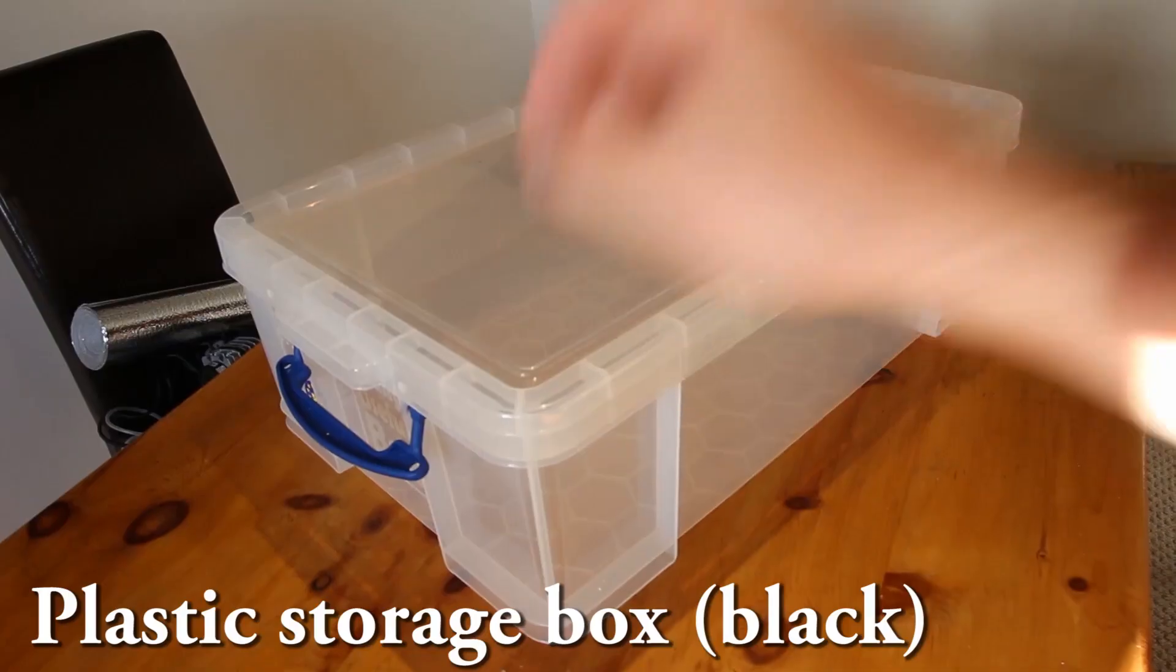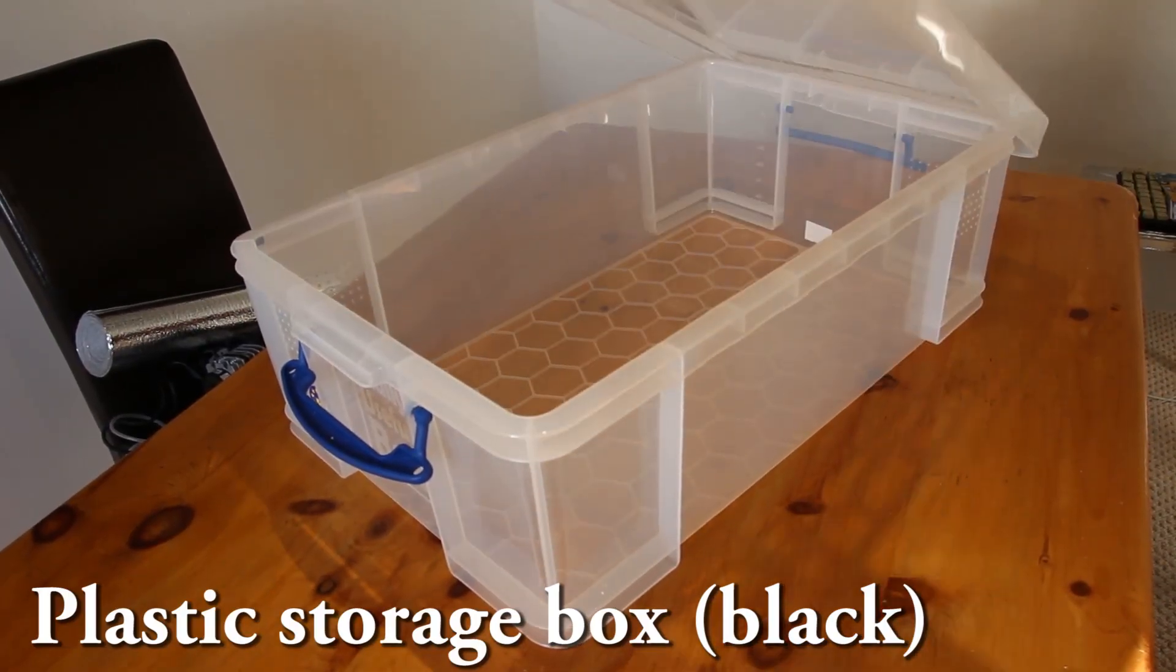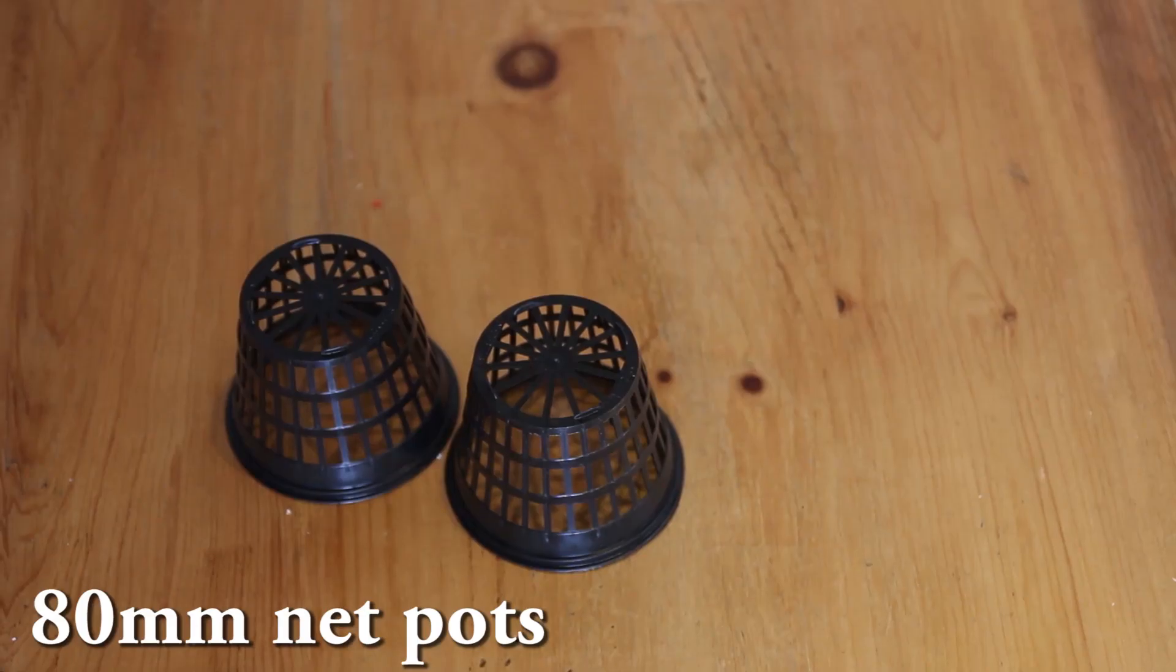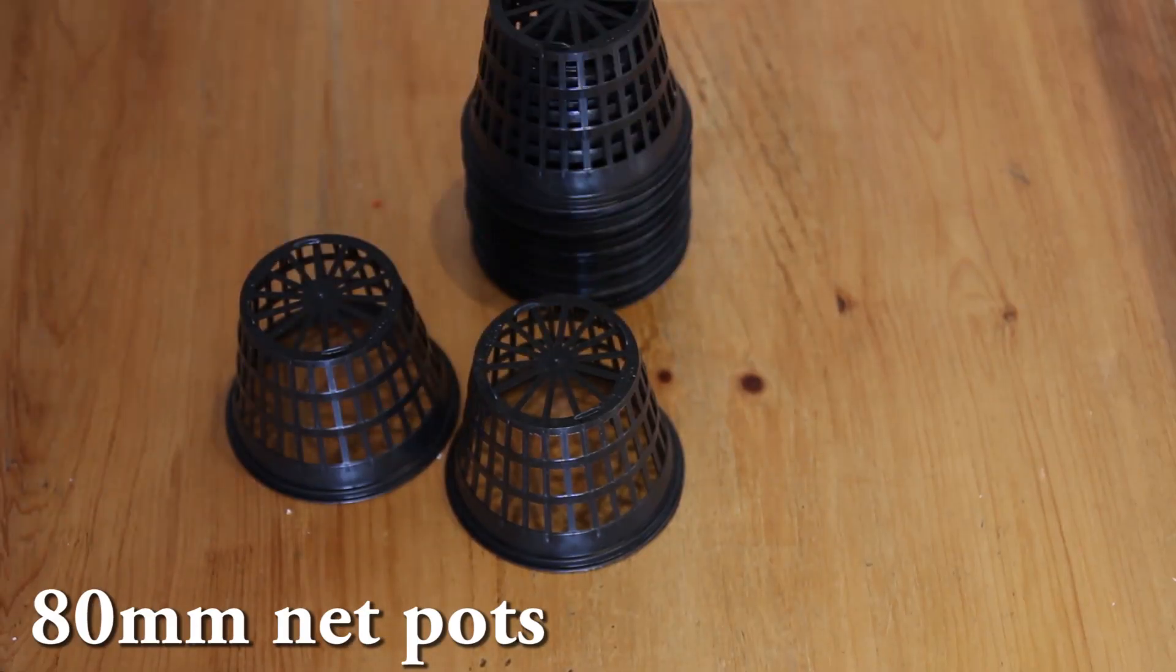So let's have a look at some of the parts that we need. We'll need a strong storage box like this one. If you can find one in black plastic that would be best. And then we'll need some net pots. These are 80 millimeter net pots.